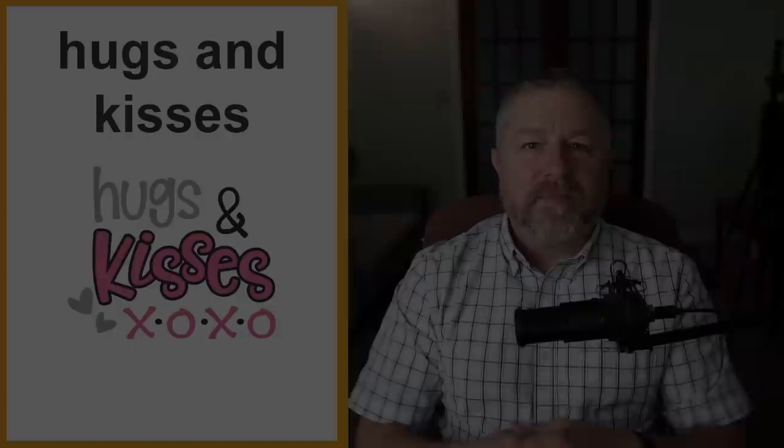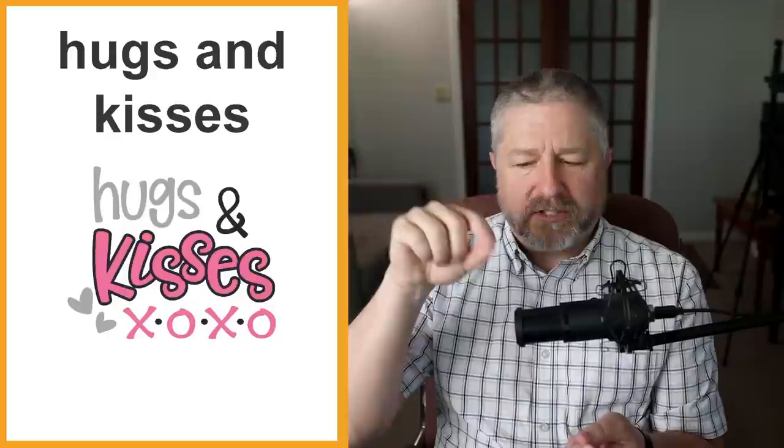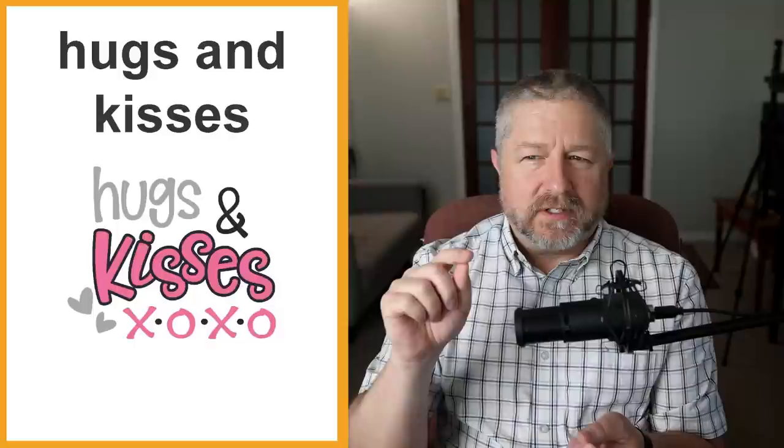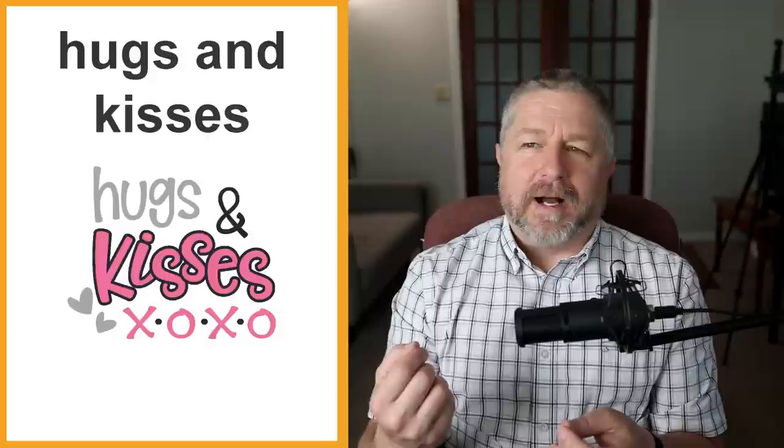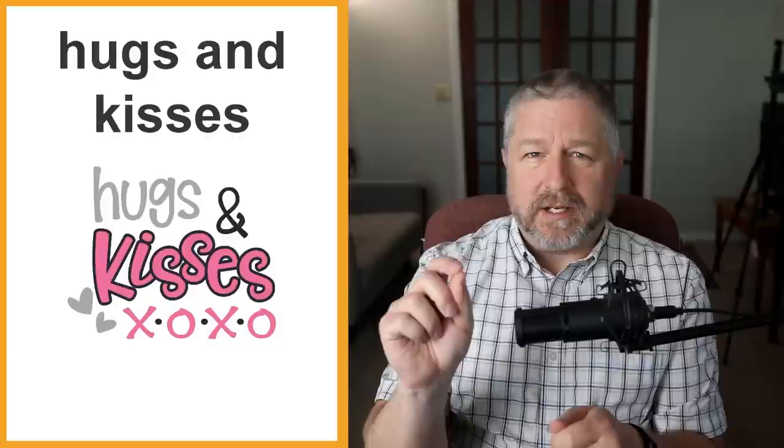Hugs and kisses. We often in a card, if we're sending a card to someone we love, we might put at the end of the card from Bob, hugs and kisses and then we actually put X's and O's. An X and O in English means hugs and kisses. I think the X is a hug and the O is a kiss. My grandma used to sign a card like have a good day, hugs and kisses from grandma and then she would put X's and O's. Sometimes people who are dating will do that. A girl will send a boy a card and say thanks for the roses on Valentine's Day, hugs and kisses your girlfriend.